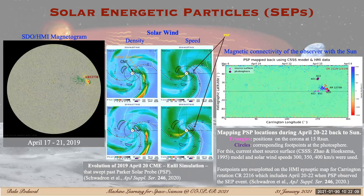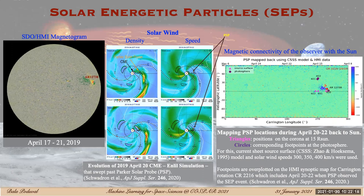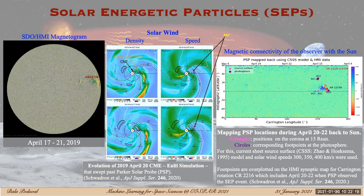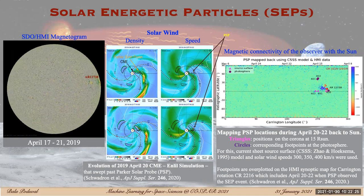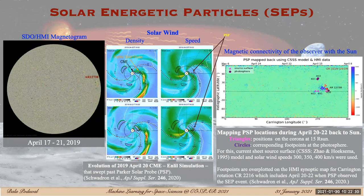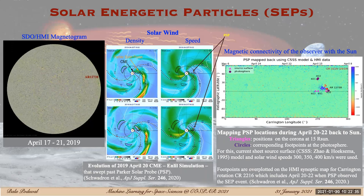Here on the left-hand side is a movie of an HMI magnetogram showing active region 12738 on the west limb that gave rise to the CME in the previous slide. The figure in the center is a numerical simulation of the solar wind in the heliosphere with a CME that went past PSP, which recorded the SEP event. The solar wind density is shown on the left panels and velocity on the right panels.